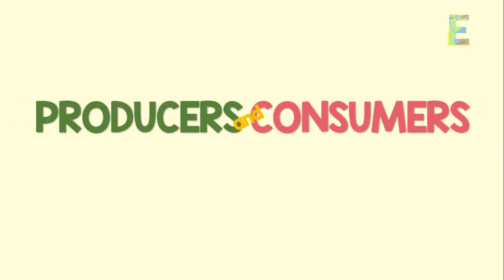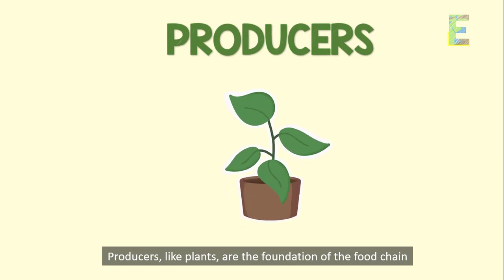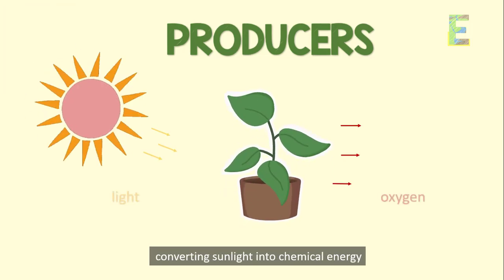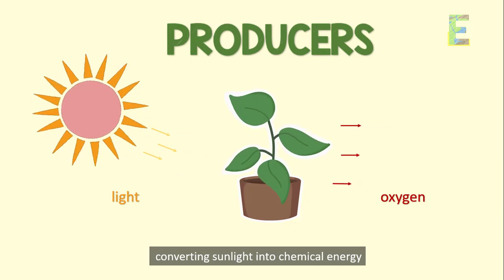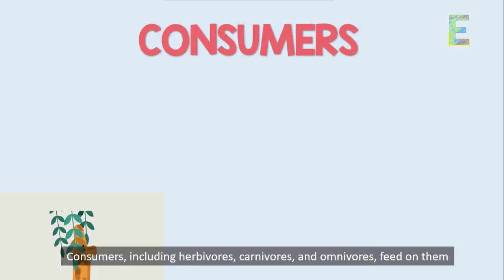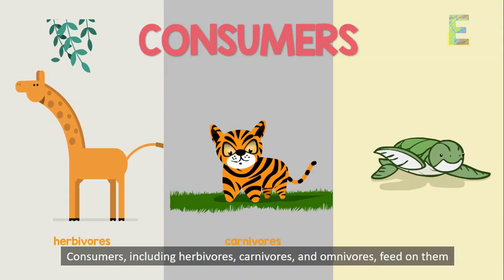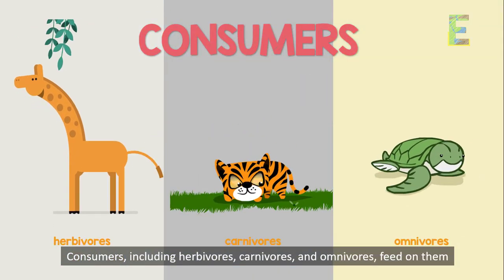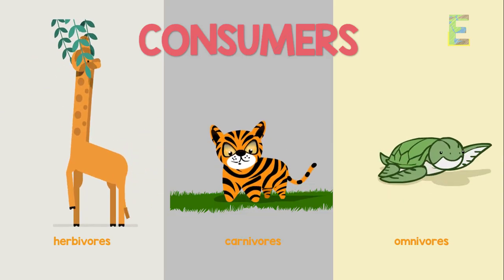Producers and consumers: producers, like plants, are the foundation of the food chain, converting sunlight into chemical energy. Consumers, including herbivores, carnivores, and omnivores, feed on them.